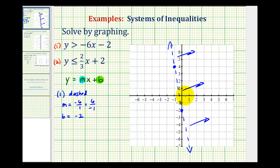For example, we picked the origin, which has coordinates zero, zero. Notice how we'd have zero is greater than negative two, which is true, which tells us to shade on this side as well.